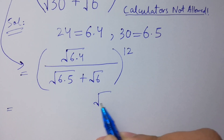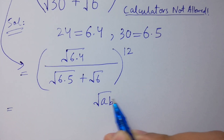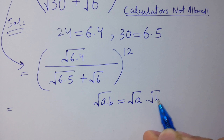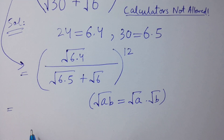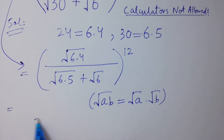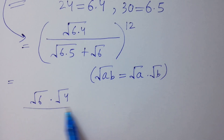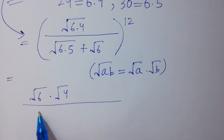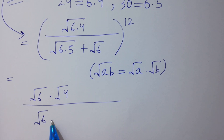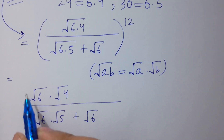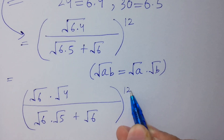Since square root of a·b equals square root of a times square root of b, we have square root of 6 times square root of 4, over square root of 6 times square root of 5 plus square root of 6, to the whole power 12.